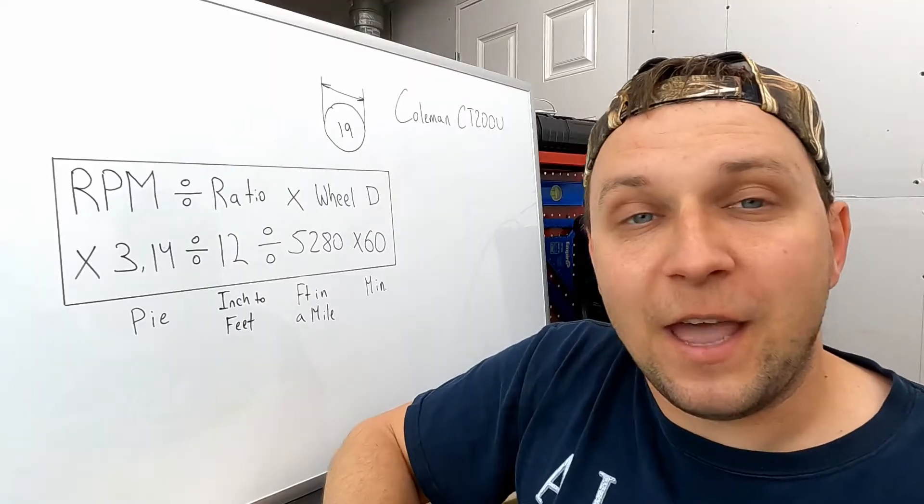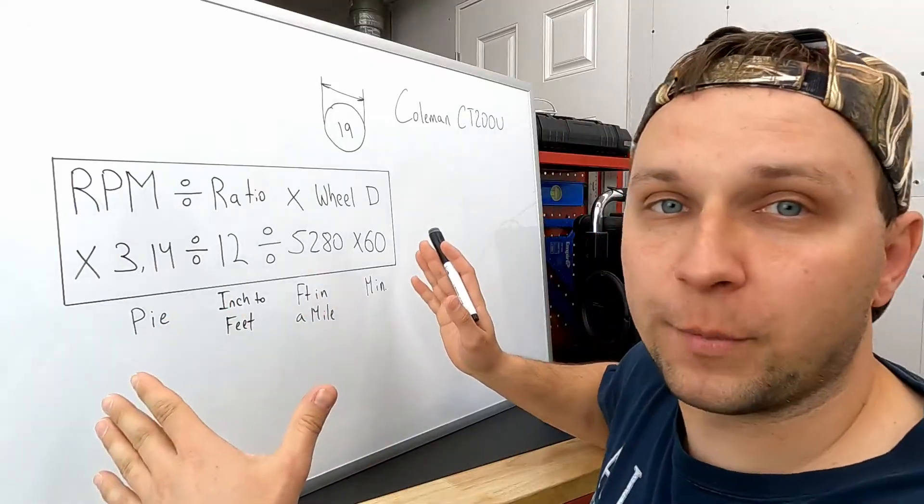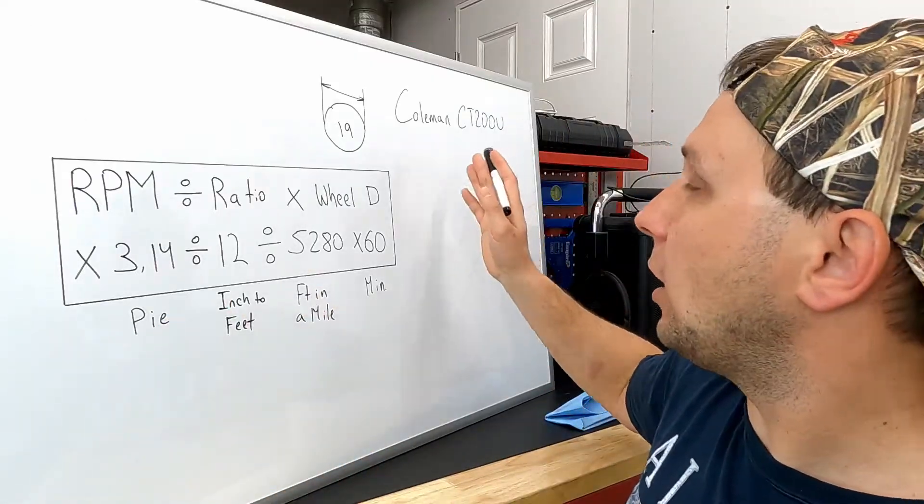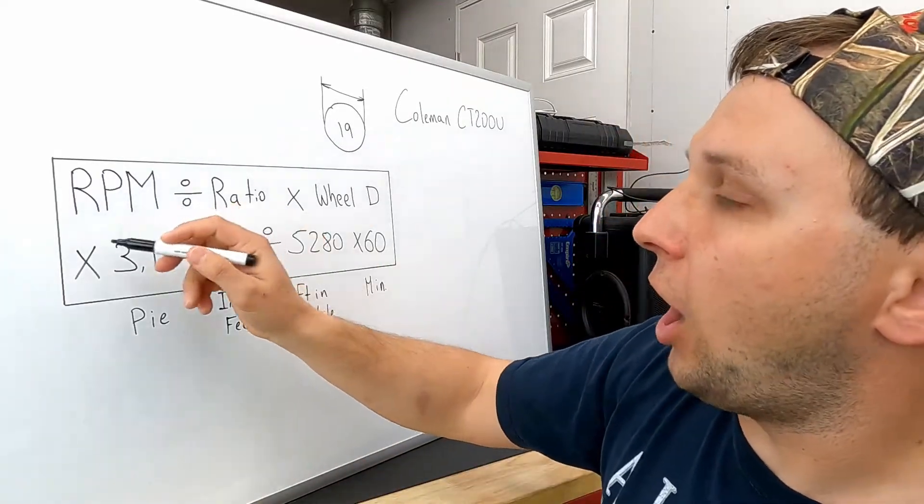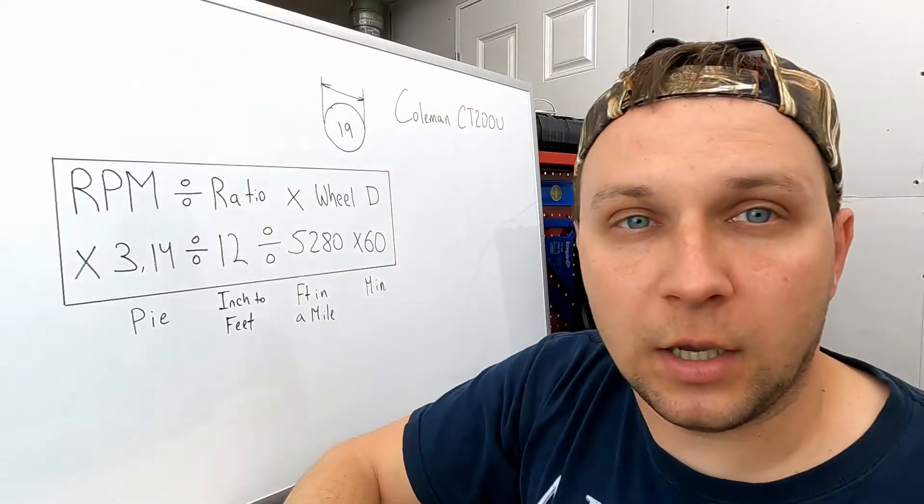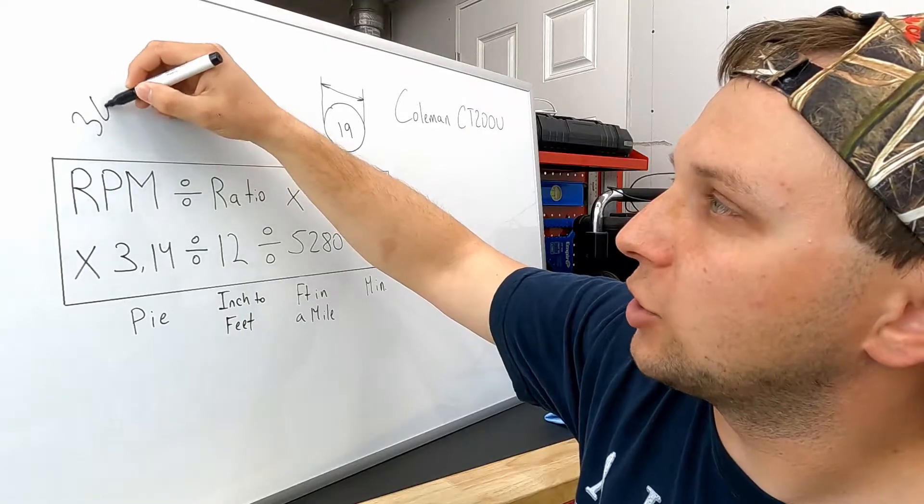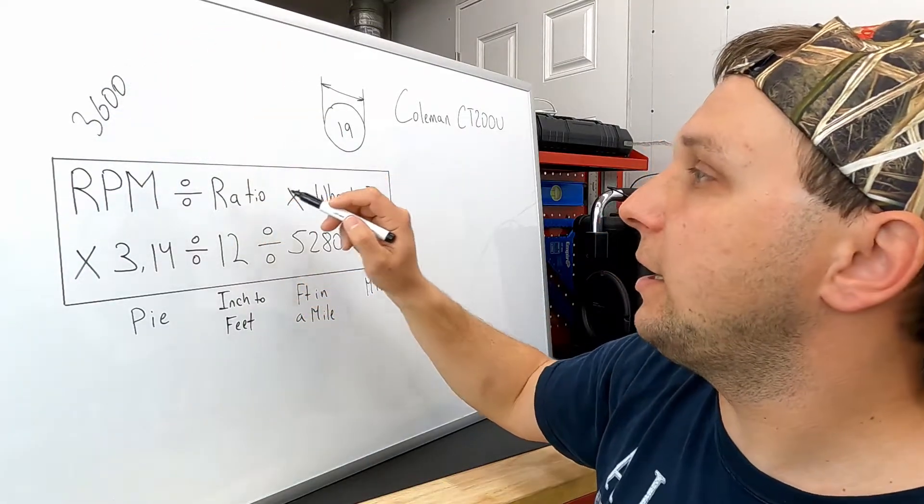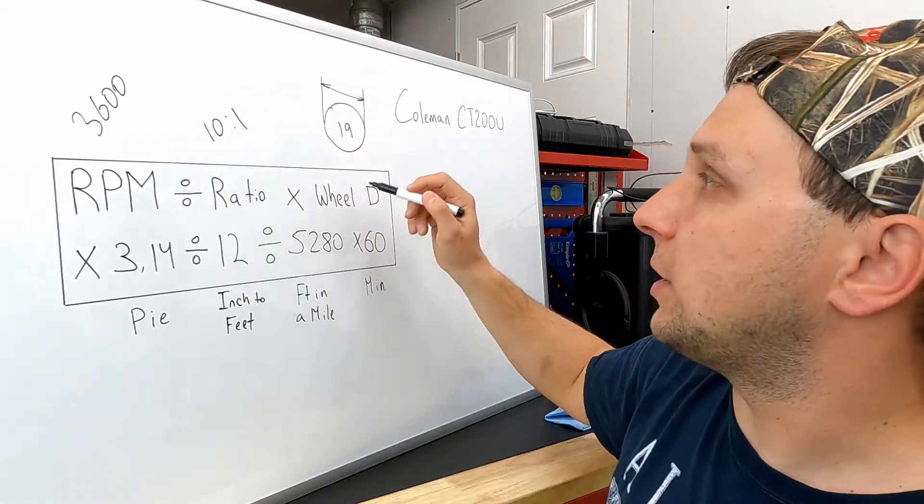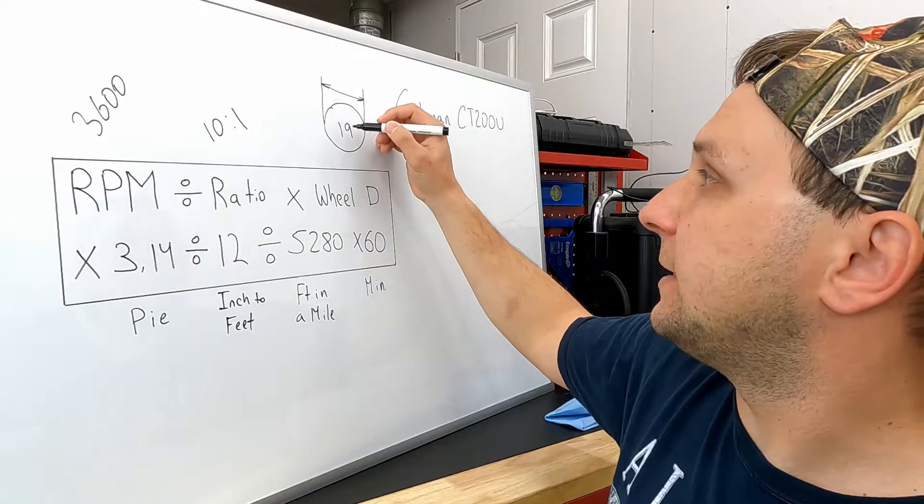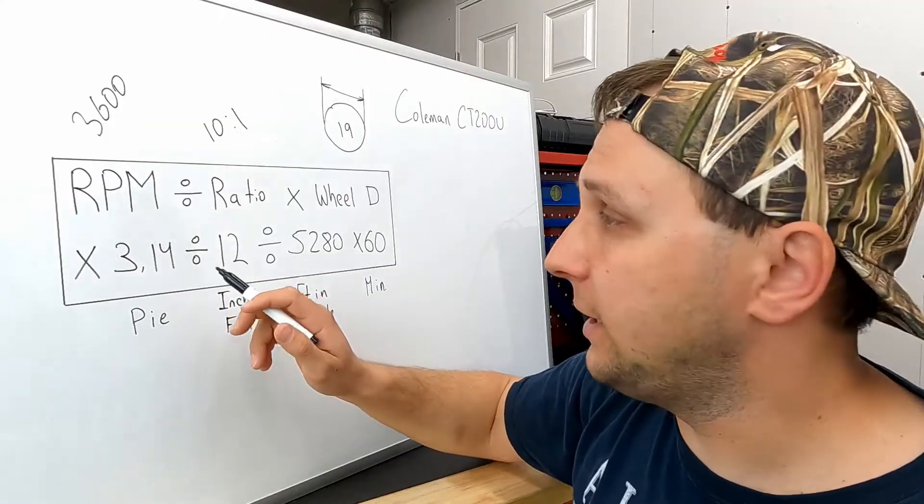Now since we know the final gear ratio, we can calculate the top speed. Here's our formula. We're gonna take Coleman CT 200U minibike for example. RPM with the stock engine without any mods, it's gonna turn 3600 RPM.